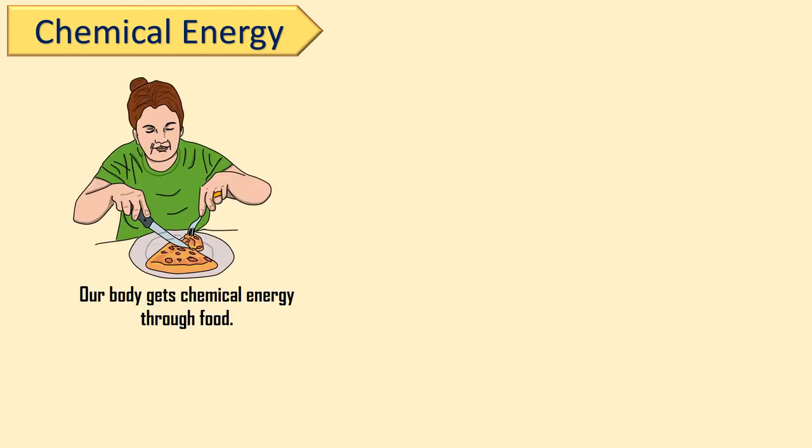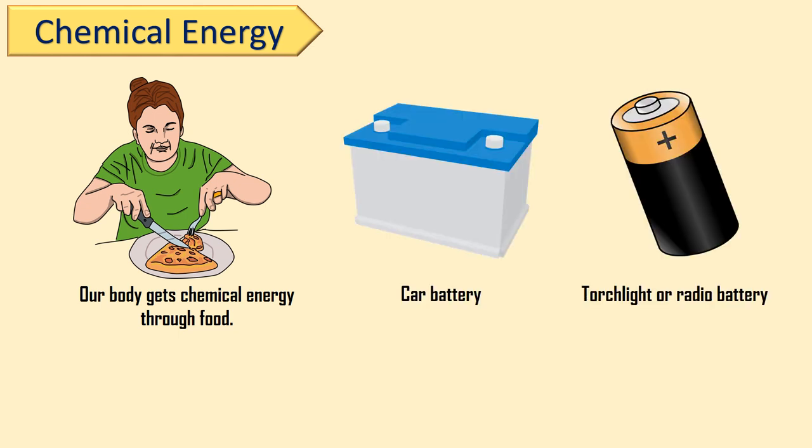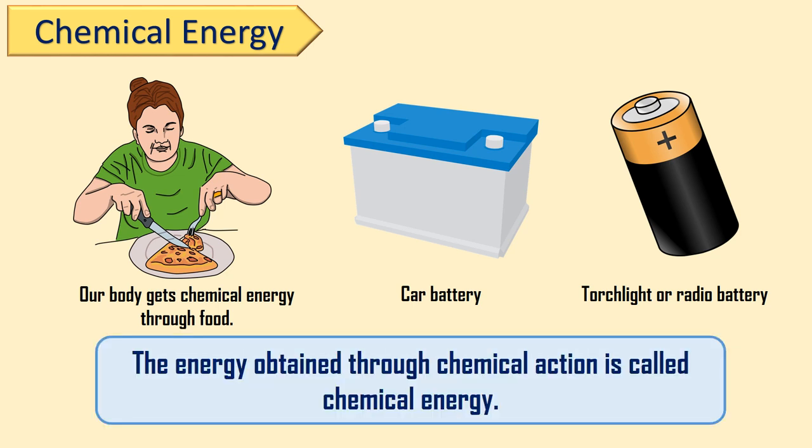Now, we will see chemical energy. Do you know how we get energy for our body? Our body gets chemical energy through food. Also, petrol, gas, wood and coal all have chemical energy in them. Chemical energy exists in cars, torch lights, and in radio batteries, which give us electrical energy or sound energy. The energy obtained through chemical action is called chemical energy.